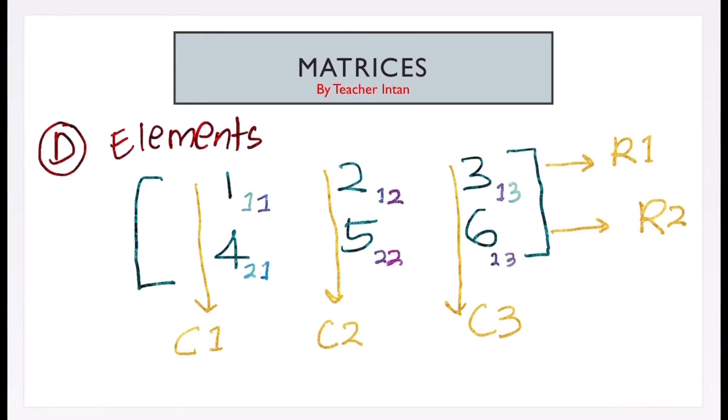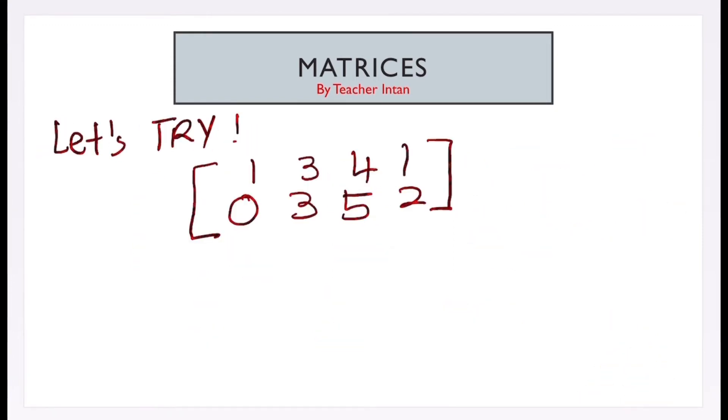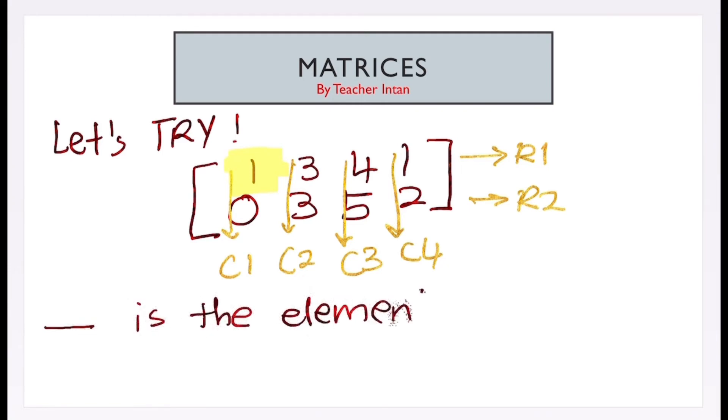Let's try some correction, shall we? Let's try to find out the elements in this matrix. So, first and foremost, we must know the rows and the column for this matrix as shown on the screen. So, for the number 1 highlighted there, the element is... Let's see. Number 1 is in row 1 and column 1. So, we write down element as a11.